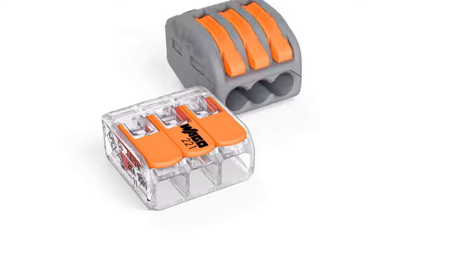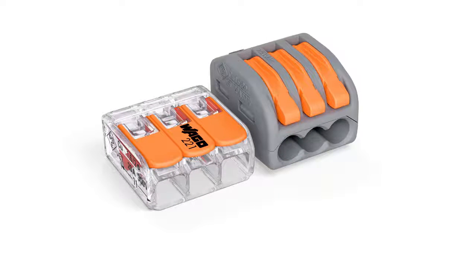Wago's 221 series compact splicing connector for all conductor types saves 40% more space than its predecessor, thanks to a significant reduction in size. This makes connections possible, even in the smallest, most difficult to access installations.